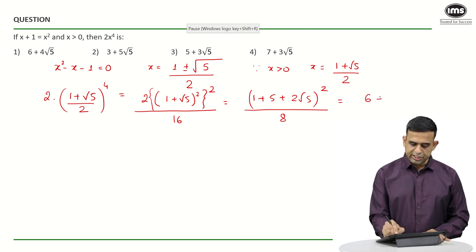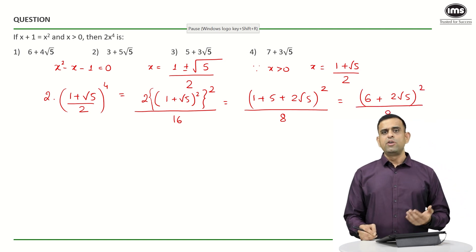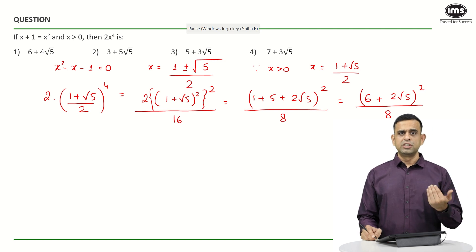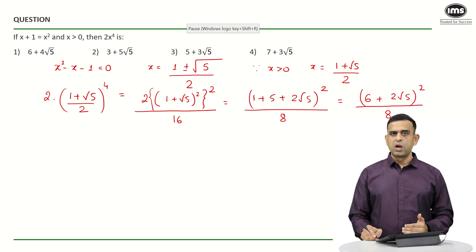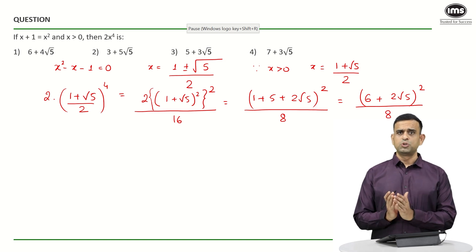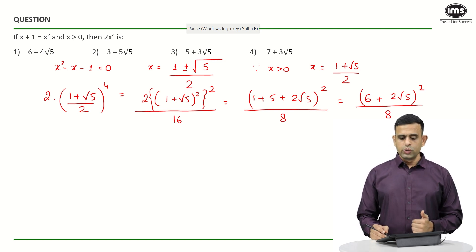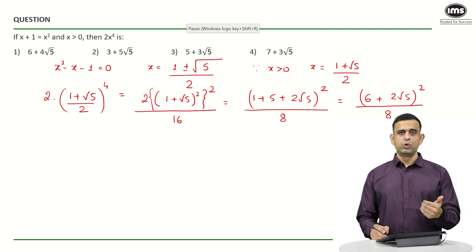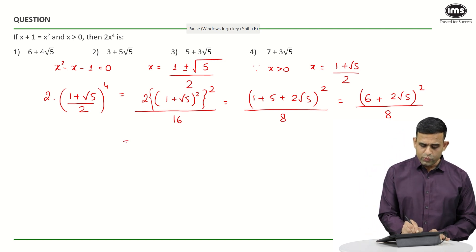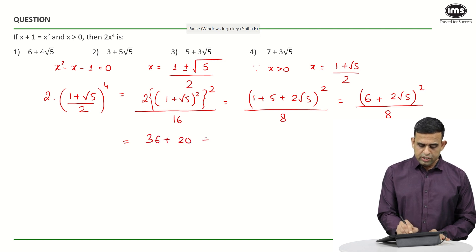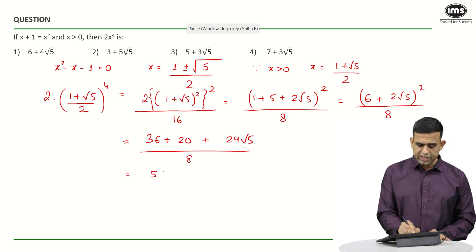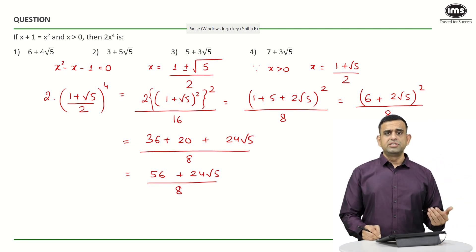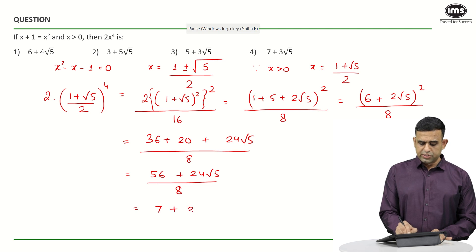The 2 over 16 term gives 8 in the denominator. This part becomes 6 plus 2 root 5, whole squared, divided by 8. Applying a plus b whole squared again: a squared gives 36, b squared gives 2 root 5 whole squared which is 4 into 5, giving 20, and 2ab gives 2 into 6 into 2 root 5, giving 24 root 5. So one gets 36 plus 20 plus 24 root 5, divided by 8, which becomes 56 plus 24 root 5 divided by 8. Cancelling by 8 gives 7 plus 3 root 5.